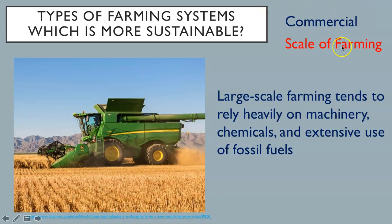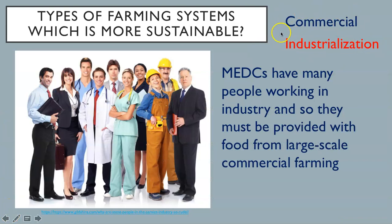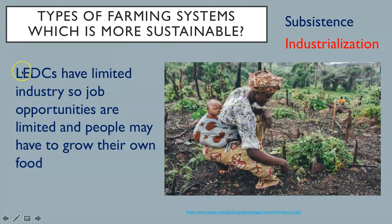Commercial, large-scale farming tends to rely heavily on machinery, chemicals, and extensive use of fossil fuels. Subsistence farming is small-scale, which tends to be more labor-intensive, but still might rely on chemicals to boost production if they can afford it. Industrialization drives commercial farming. More economically developed countries have many people working in industry, and so they must be provided with food from large-scale commercial farming. However, lower economically developed countries have limited industry, so job opportunities are limited, and people may have to grow their own food and rely on subsistence farming.